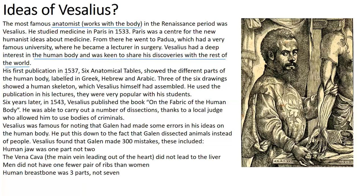Vesalius's first publication in 1537 was a book called Six Anatomical Tables, which showed different parts of the human body labelled in Greek, Hebrew, and Arabic. Three of the six drawings showed a human skeleton which Vesalius assembled himself. He achieved this by dissecting human bodies, giving him a deep understanding of human anatomy. He used the book in his lectures, encouraging future students to become anatomists. Six years later he published his more famous work, On the Fabric of the Human Body.